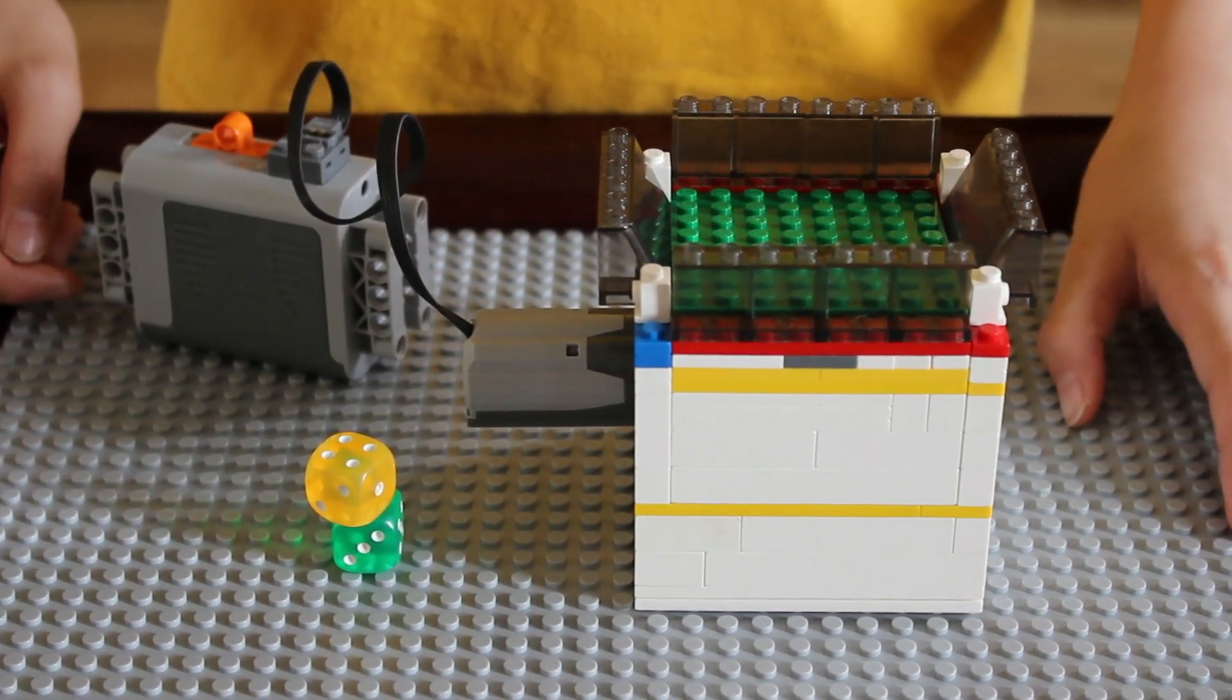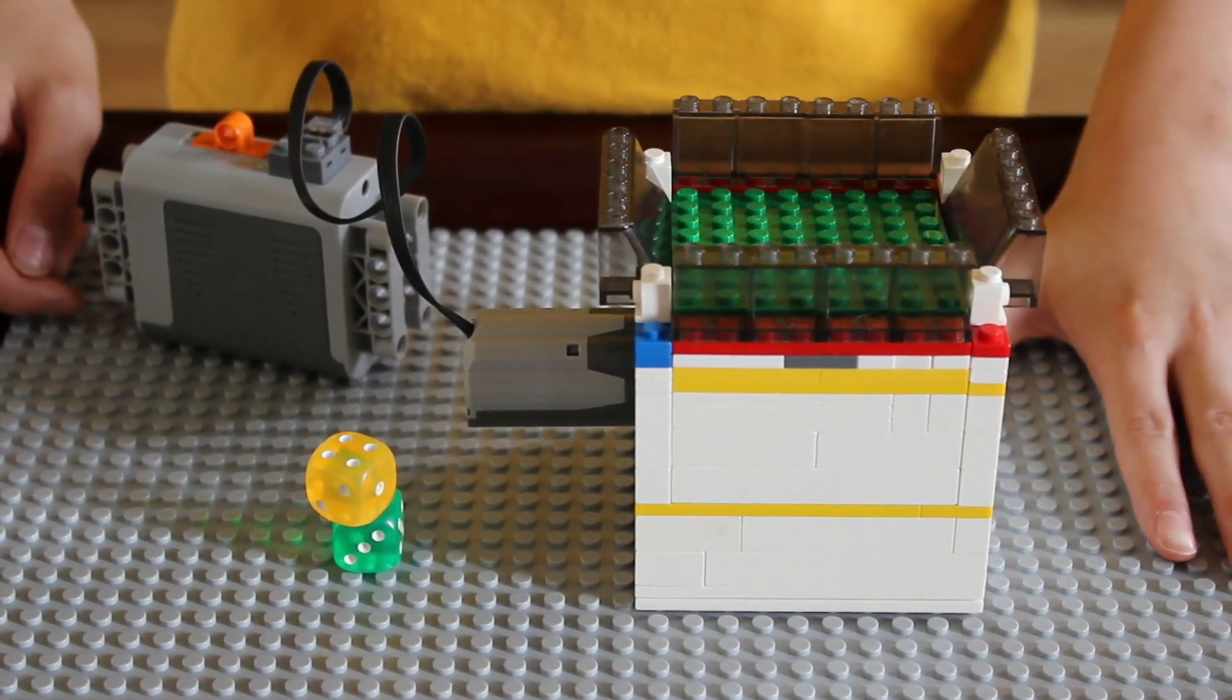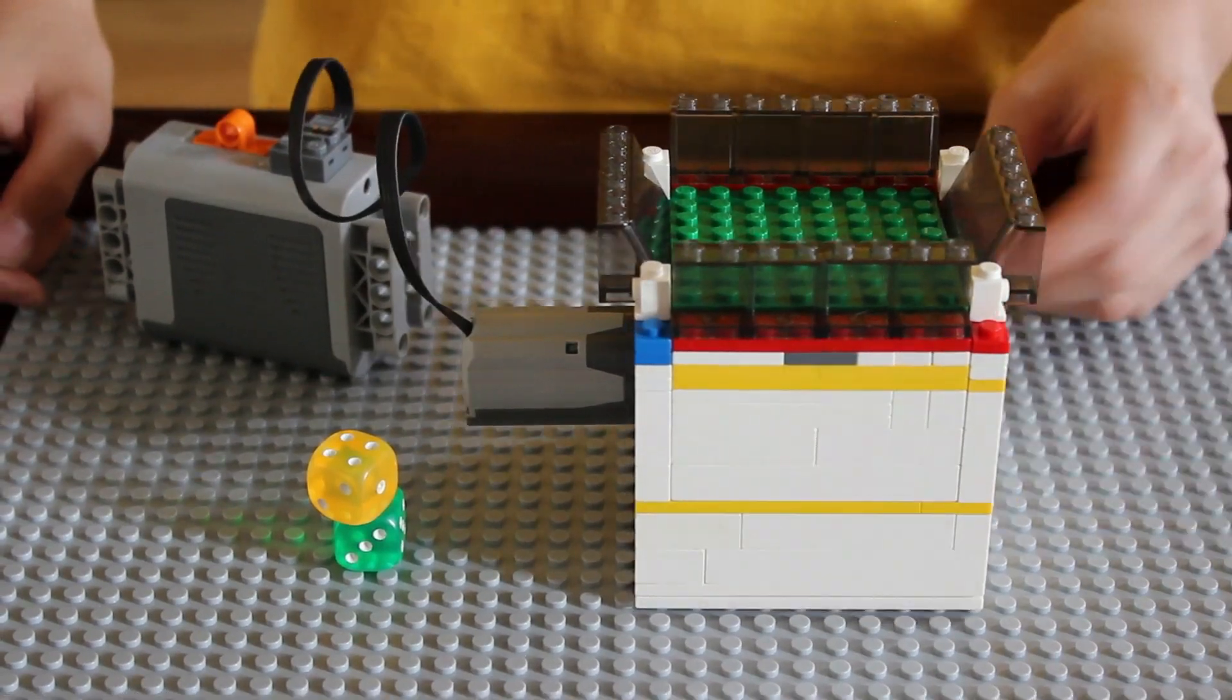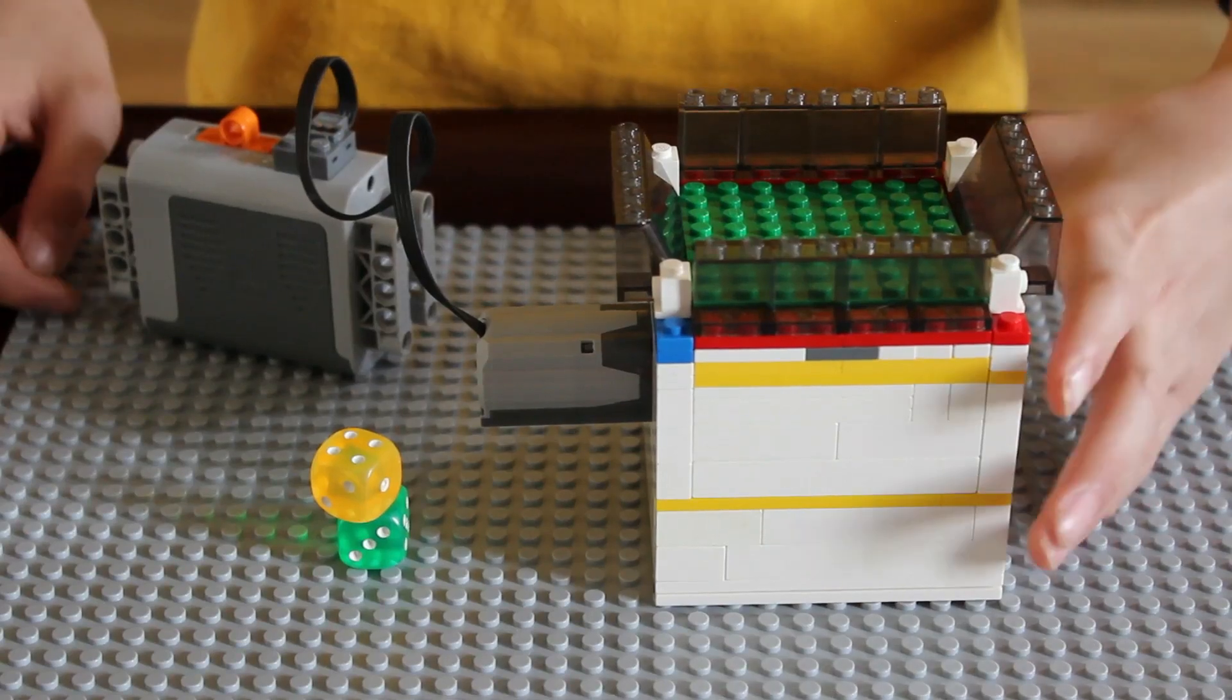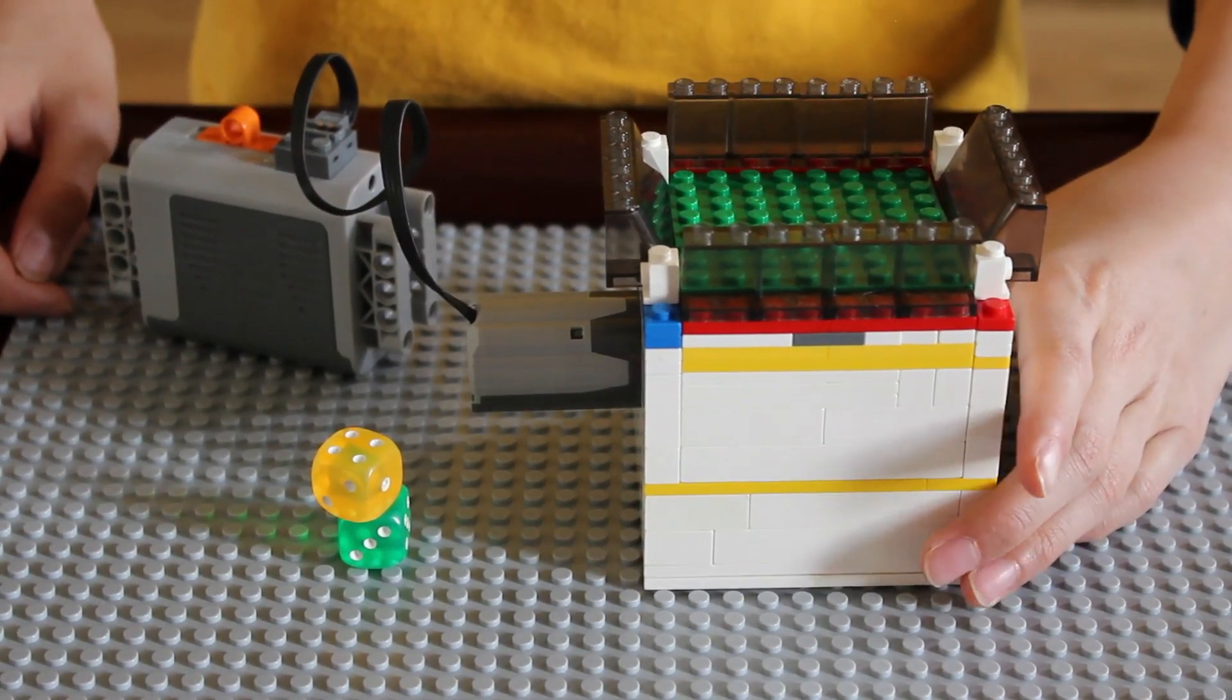My inspiration was that last night I watched this Monopoly Millionaire show. There was this dice roller called the Rock and Roller. It had this thing on top that vibrates and the dice rolls.